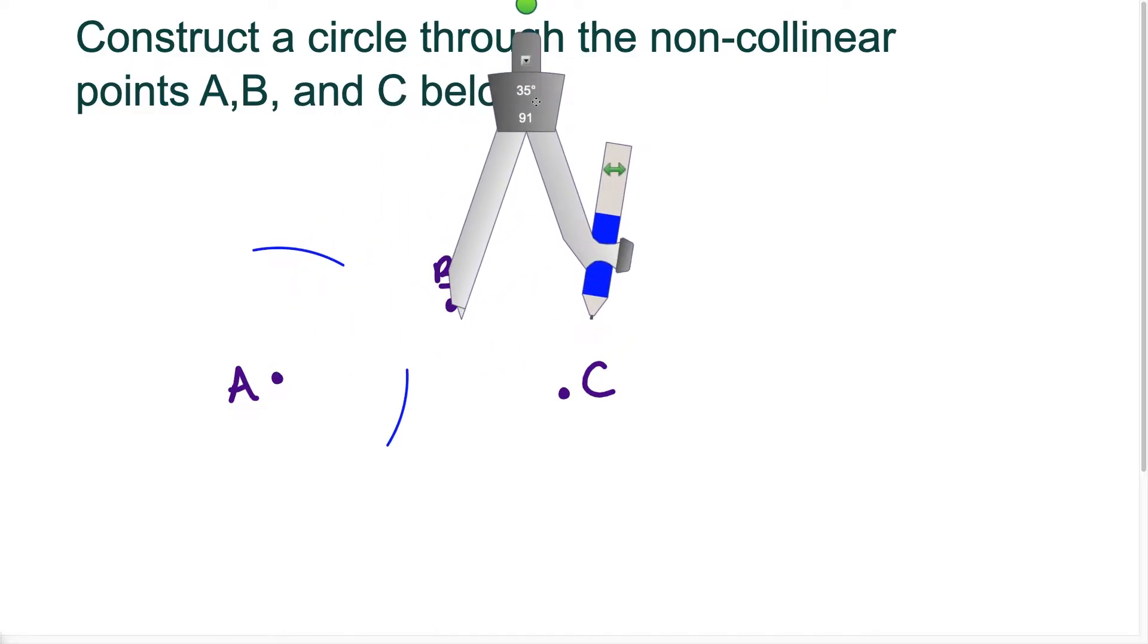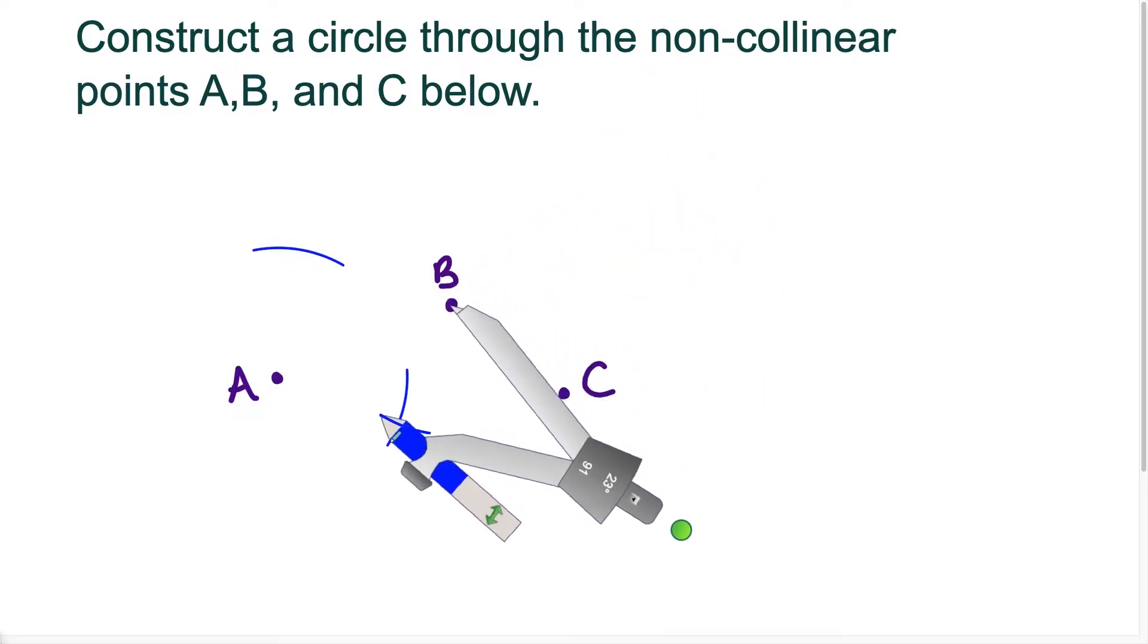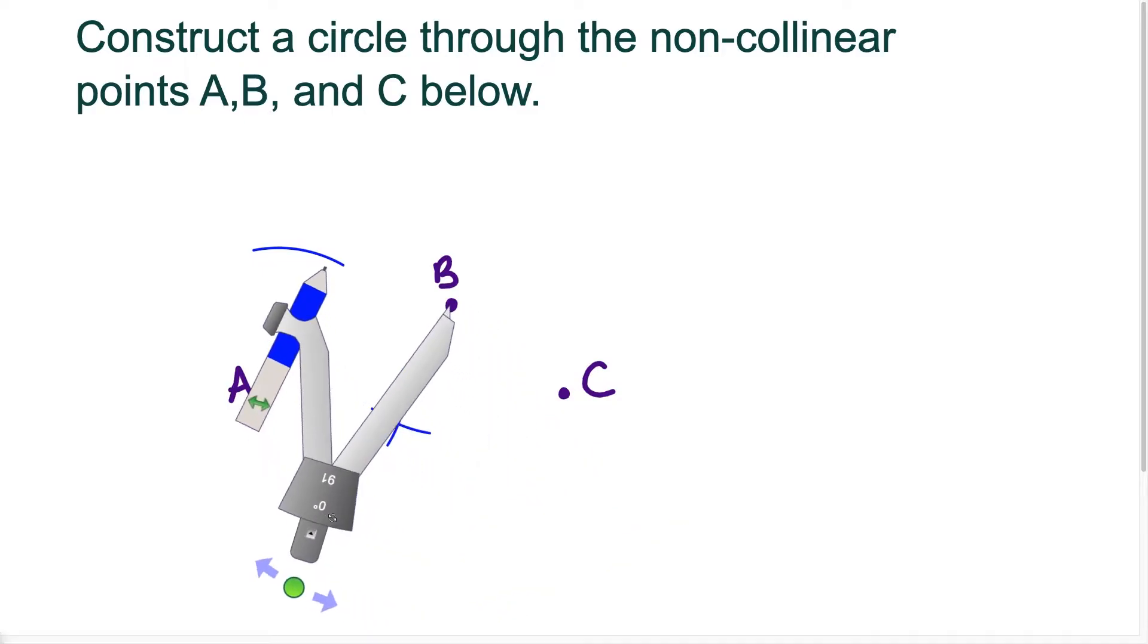So now I move the compass over to point B and I'm going to repeat this process. So we're going over to point B here and I swing the arc in this direction. See, it hits that initial arc that we made and I swing it again.